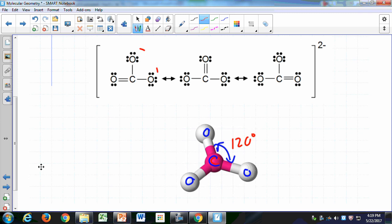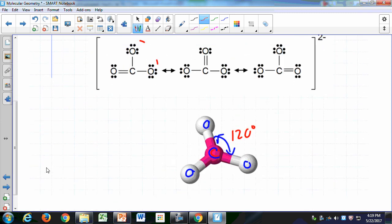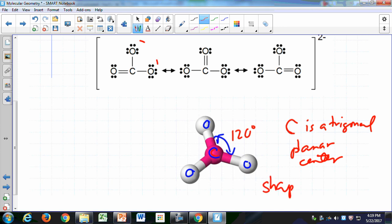We say that this center, carbon, is a trigonal planar center. And the shape of the ion is also trigonal planar. And the angle that goes through the central atom, the carbon atom in this case, is going to be 120 degrees.